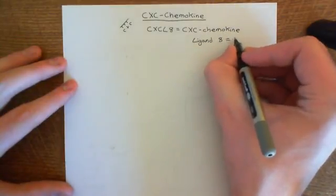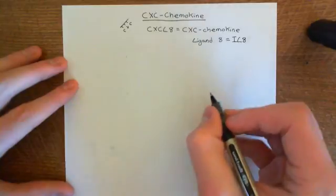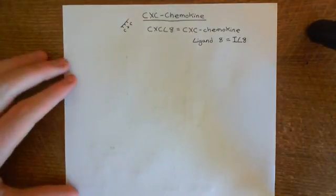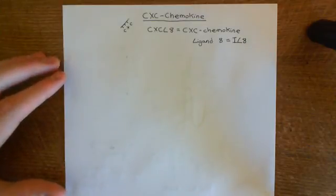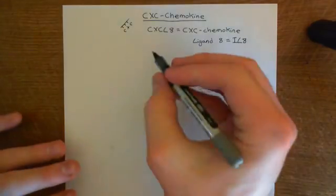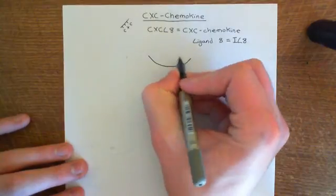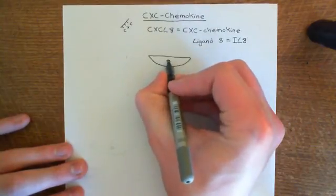CXC chemokine ligand 8 also has another name — it's also occasionally referred to as interleukin 8. So you may well hear it referred to as that. What does CXCL8 do? Basically, it's very involved in the recruitment of neutrophils. It's going to be stuck on the apical surface of endothelial cells at the site of inflammation.